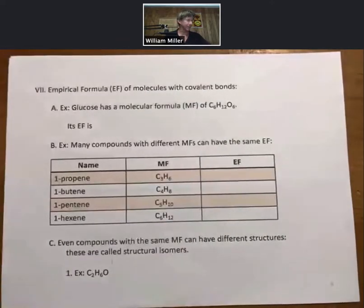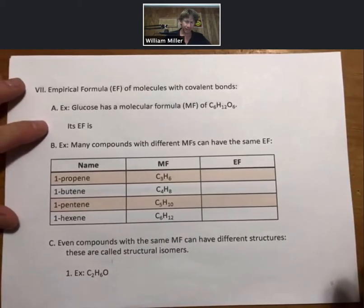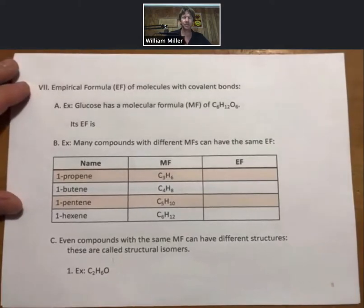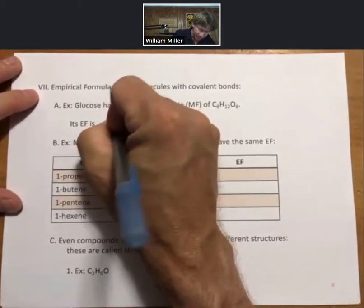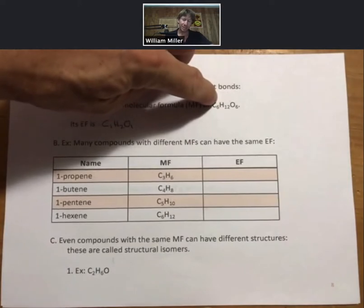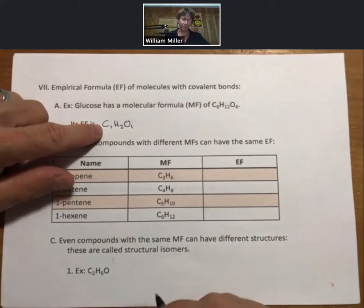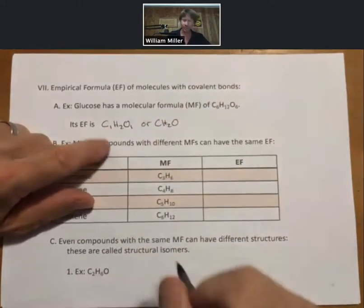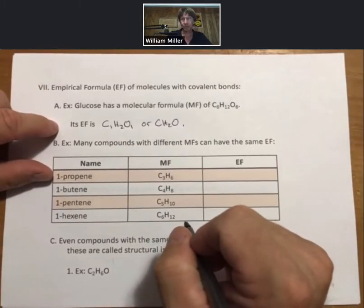Now let's pick up with empirical formulas, abbreviation EF. As an example, glucose has a molecular formula MF of C6H12O6. Its empirical formula is, divide the numbers in the molecular formula by the greatest common factor, which is 6, to get C1H2O1 or CH2O. You don't have to put the ones but it doesn't hurt either. The empirical formula is the formula with the smallest whole numbers possible.